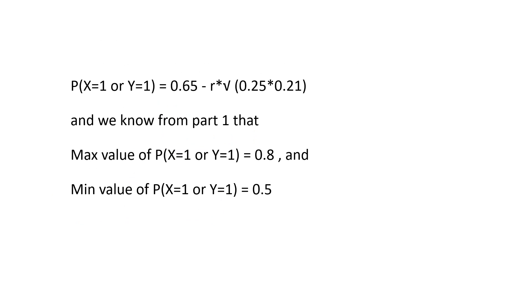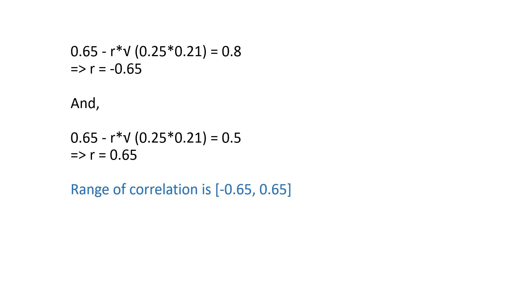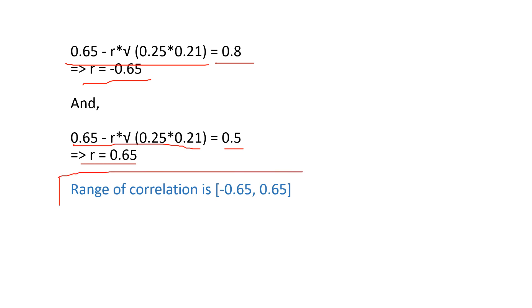From part one, the maximum value of P(X=1 or Y=1) is 0.8 and the minimum is 0.5. Setting the expression equal to 0.8 gives a correlation of -0.65, and setting it equal to 0.5 gives a correlation of +0.65. Therefore, the range of correlation between the two bond defaults is -0.65 to +0.65.